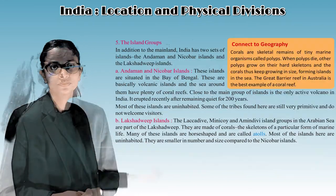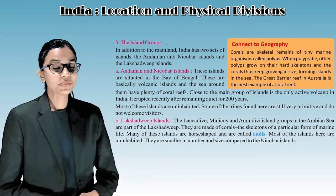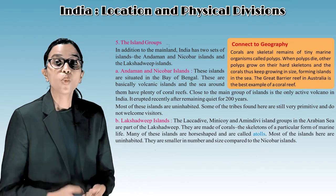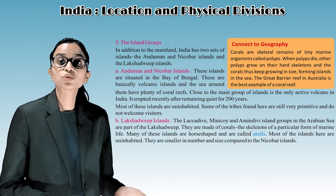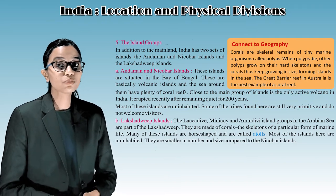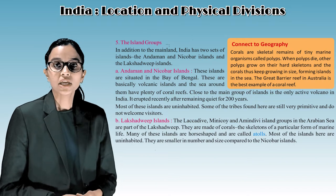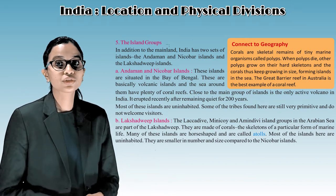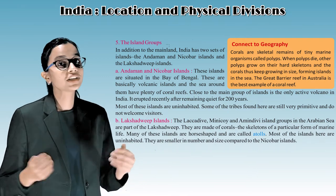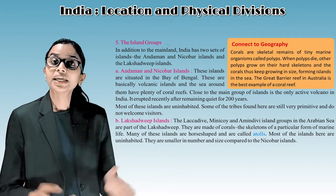The coastal strip along Tamil Nadu state is called the Coromandel Coast. Connect to geography: Corals are skeletal remains of tiny marine organisms called polyps. When polyps die, other polyps grow on their hard skeletons and the corals keep growing in size, forming islands in the sea. The Great Barrier Reef in Australia is the best example of a coral reef.